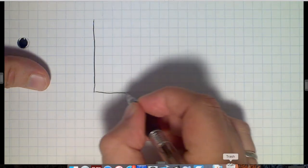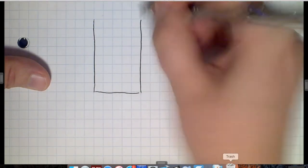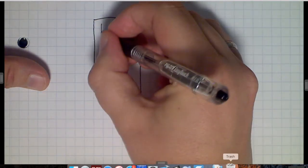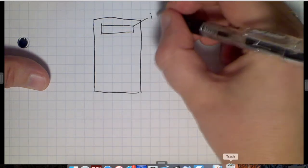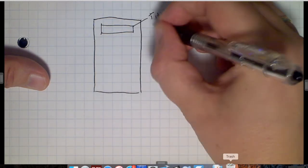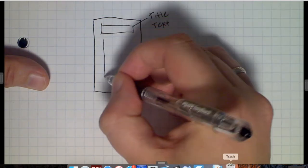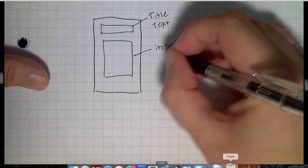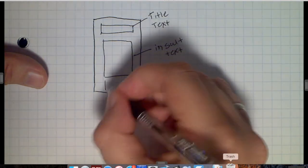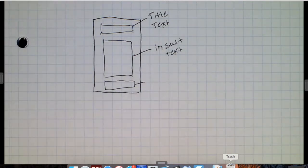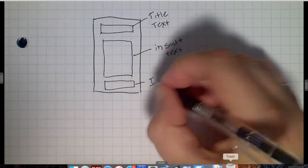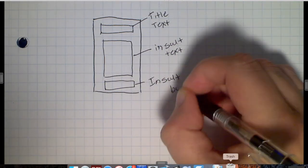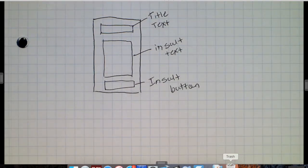We want to have essentially one screen where the user will see when they load up the app. We'll have some text at the top — we'll call this 'title text' — a large body of text that gives the insult — 'insult text' — and a button at the bottom that every time they push it will generate a new insult, which we'll call 'insult button'.